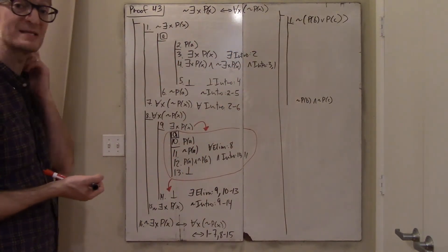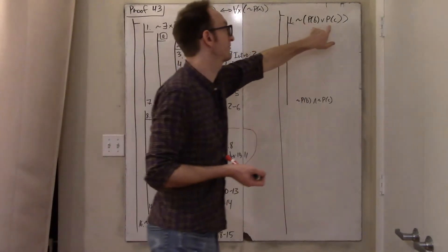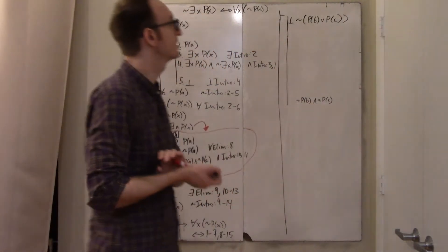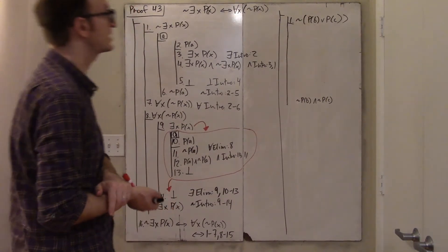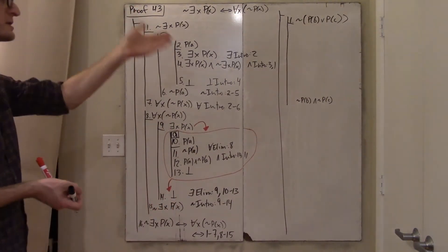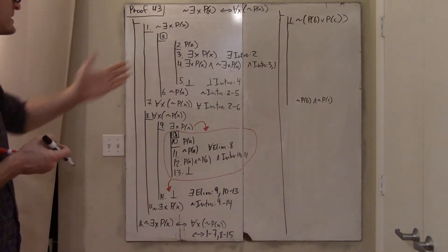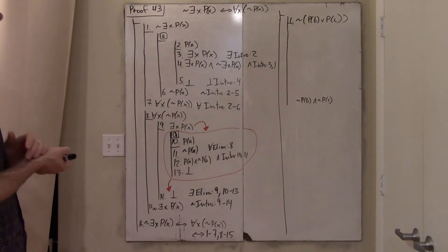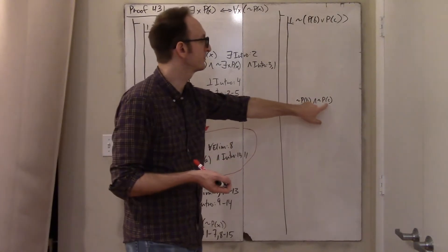This becomes a propositional logic De Morgan law: the negation of a disjunction is the conjunction of the negations. Let's do this propositional proof to examine the parallels, because I think there's an exact parallel here.